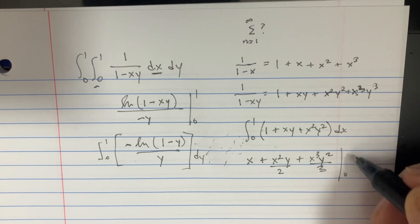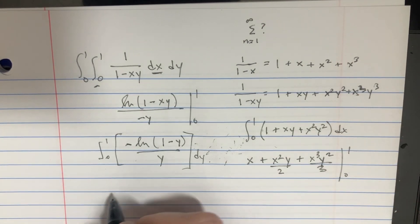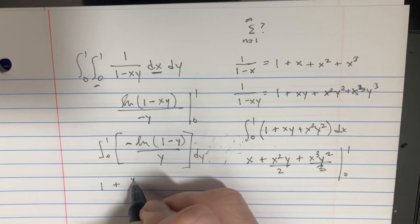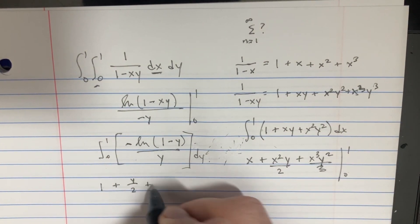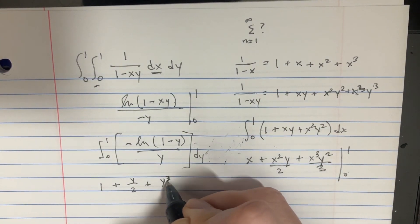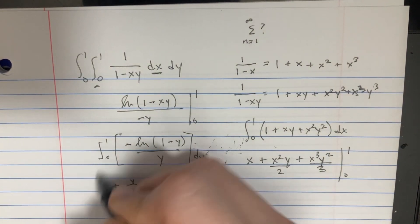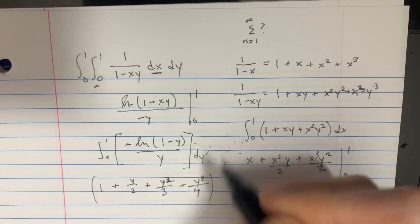x to the third, y squared divided by three. So yeah, and then we're going to go from 0 to 1. So we could evaluate that as being like 1 plus just y over 2 plus y squared over 3, and then plus y to the third over 4. Okay, and so now we have that.